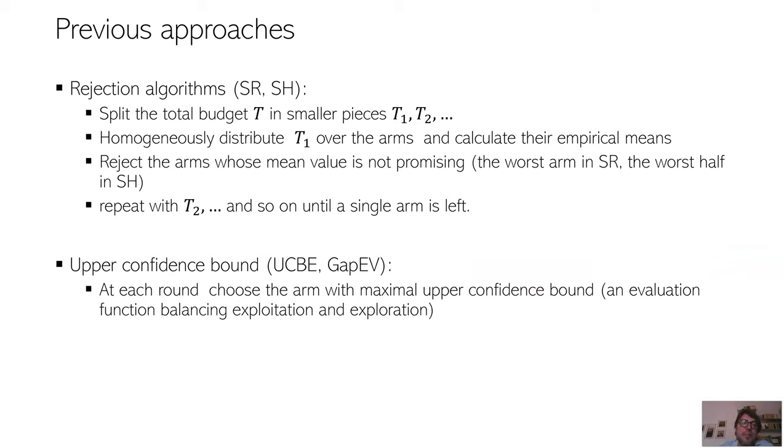So previous approaches can be divided in two families. Rejection algorithms like SR or SH. In rejection algorithms, the exploration is split in several phases. Each phase consumes a fraction, T1, T2, of the total budget T. And in each phase, the corresponding budget is homogeneously distributed over the arms. Then, with the new observation, we can update the empirical means.